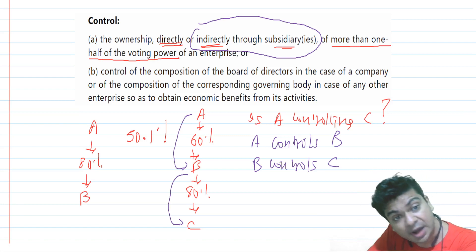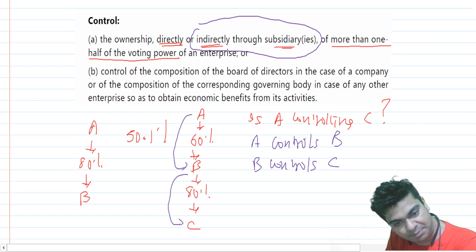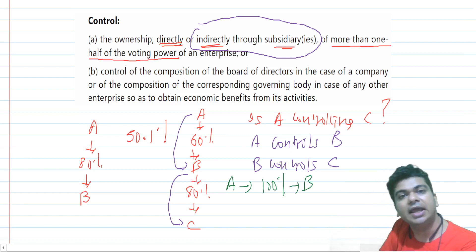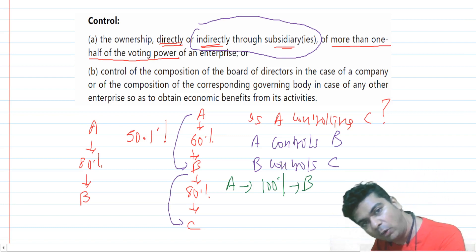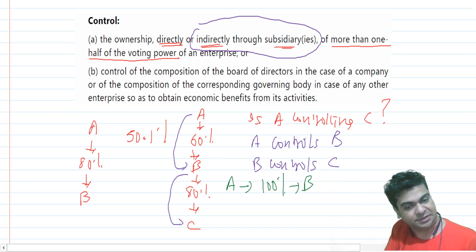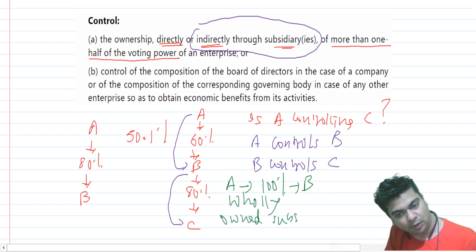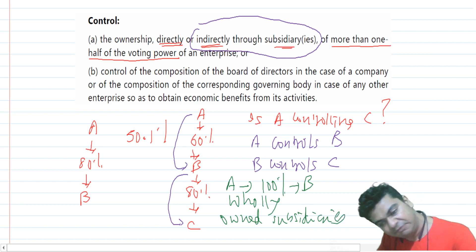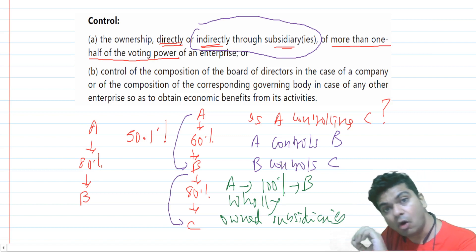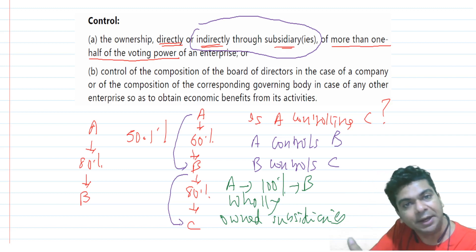You can even have a situation where you hold 100% shares. For example, if A has purchased 100% shares of B, we can say B is getting controlled by A. This is popularly known as wholly owned subsidiaries. This is one way to establish control — directly or indirectly through a subsidiary controlling more than one half of the voting power of the enterprise.